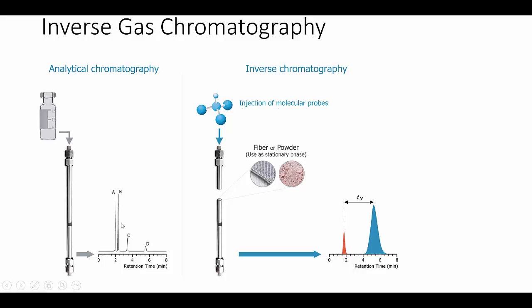IGC is completely different. You have the same column but inside the column you have your unknown. You have a fiber, a powder, a polymer on an inert support and you inject known simple solvent molecules like acetone or hexane or toluene and you measure Tn.